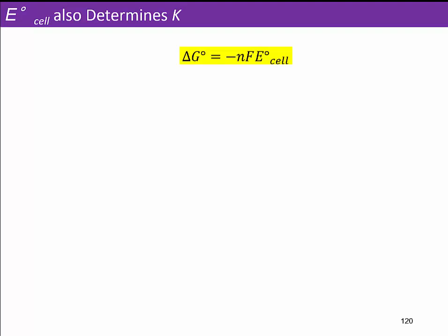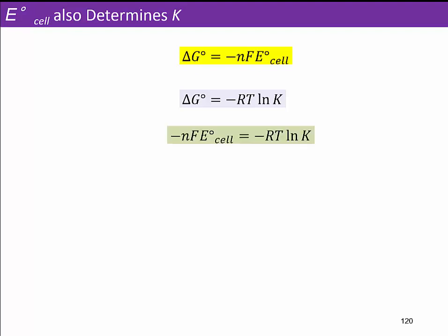If we know delta G is equal to minus NFE — that's our electrochemical relationship to delta G, our free energy — and if we know delta G is also going to be equal to minus RT ln K, which we learned at the end of last chapter, we can use delta G as the middleman and say minus NFE equals minus RT ln K. We'll do a little rearranging and isolate E_cell: E_cell equals RT divided by NF times the natural log of K.